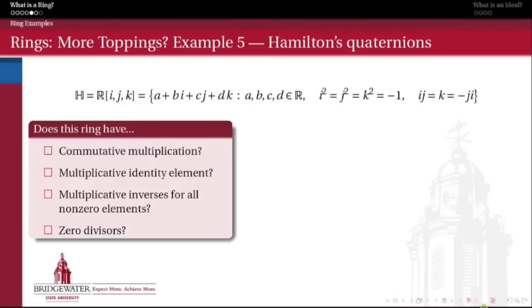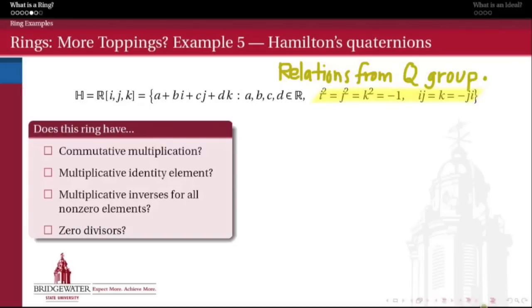We're going to start by looking at a very rich example called Hamilton's Quaternions. We've heard the name quaternion before in group theory. In group theory, the quaternions are a group of order 8 with elements ±1, ±i, ±j, and ±k. Those elements have a multiplication completely analogous to three-dimensional cross products of unit vectors — namely, i times j gives k, and j times i gives minus k. So we have this anti-commutative multiplication operation on the quaternion group.